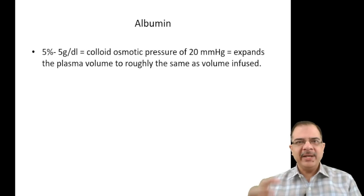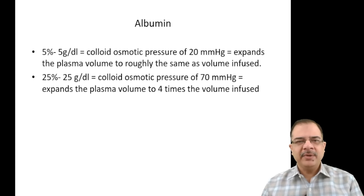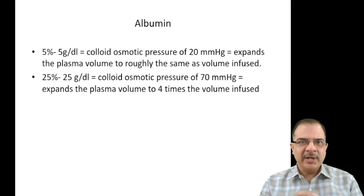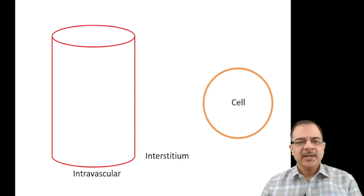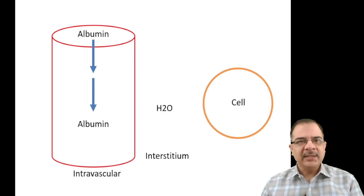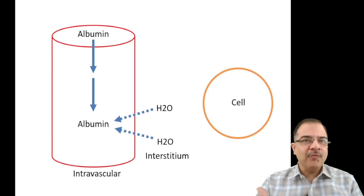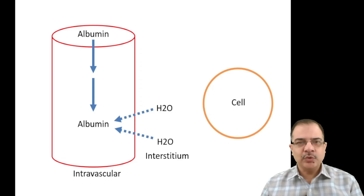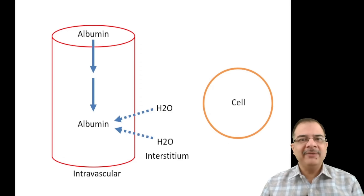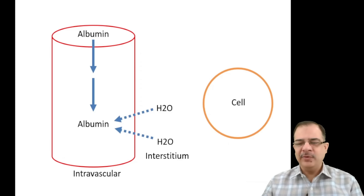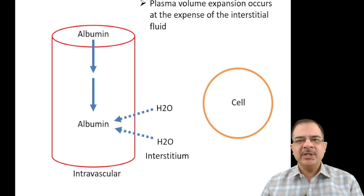Moving to colloids — albumin stays in the intravascular space. 5% albumin has a colloid osmotic pressure of 20, while 25% albumin has a colloid osmotic pressure of 70, expanding plasma volume by more than four times the infused volume — infusing 100 ml achieves ~400 ml expansion. Albumin draws water from the interstitium into the intravascular space rather than adding new fluid, so it should not be given in pure dehydration or hypovolemia.